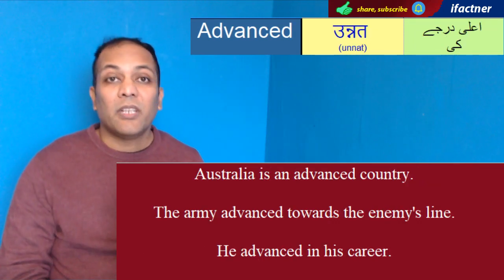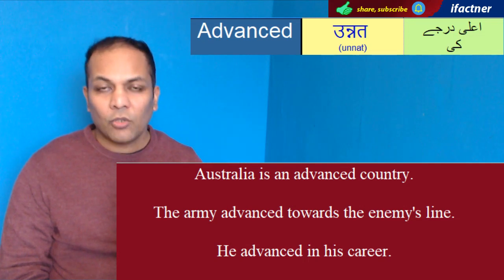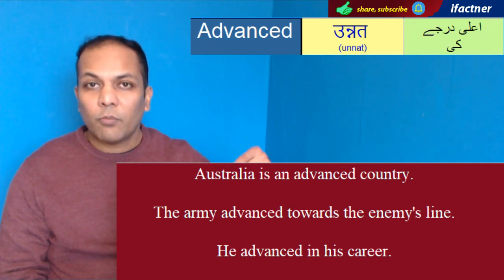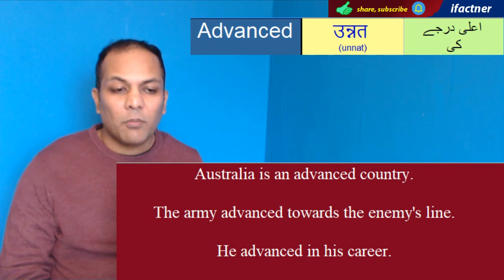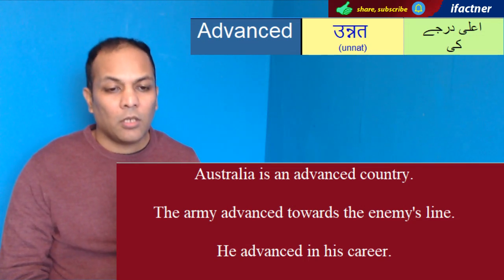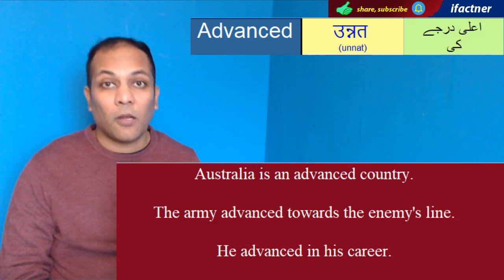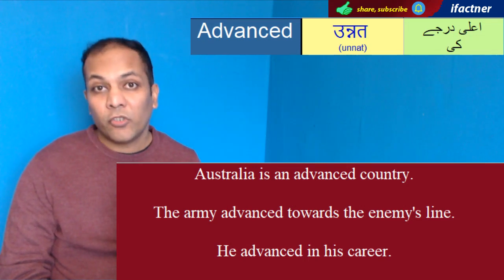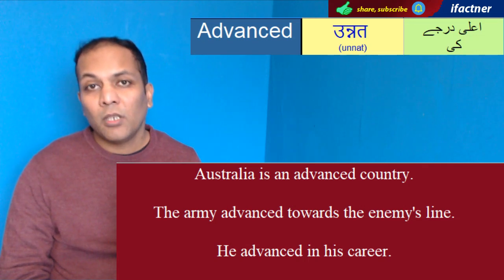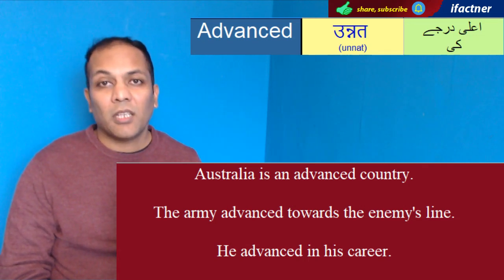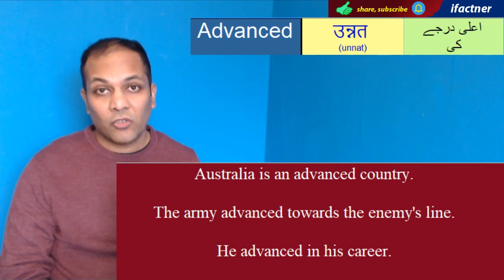Next word hai 'advanced'. Jo bada chuka hai, jo develop ho chuka hai. Advanced ka meaning hota hai: unnat, aala derjay ki, ya phir tarakki yafta. Jaisay advanced countries — jo ki technology mein aagay hain, human index mein aagay hain, happiness mein aagay hain — un ko hum advanced countries kahengay.